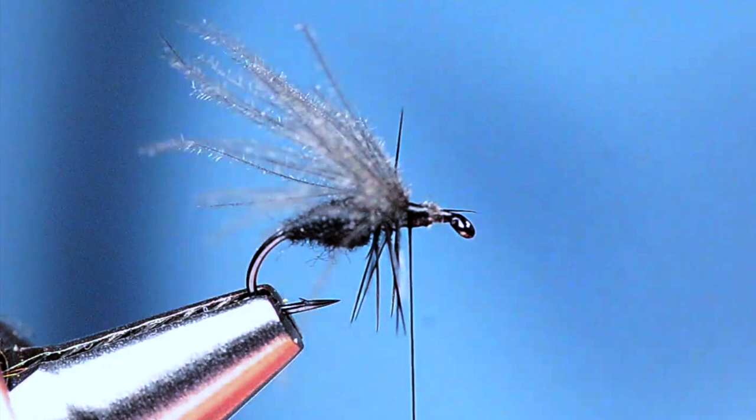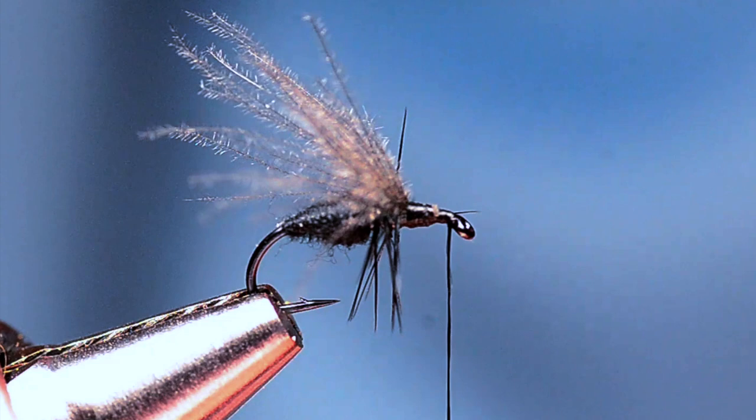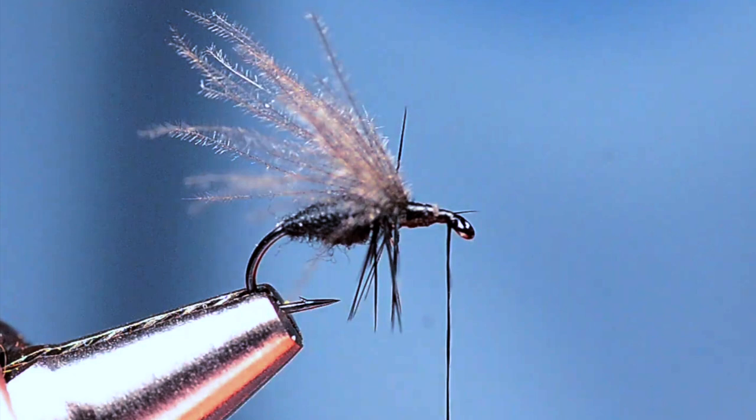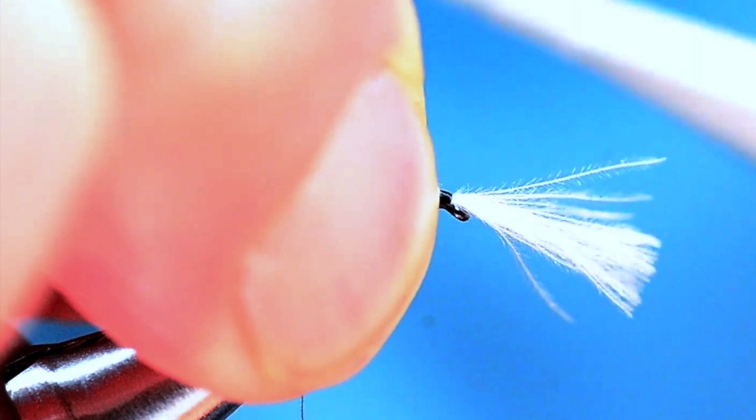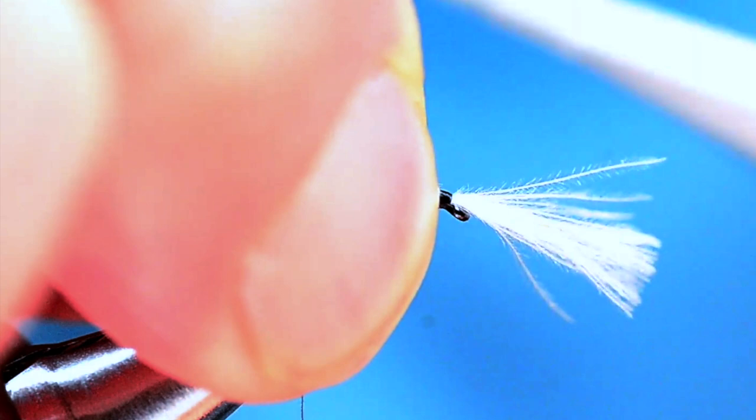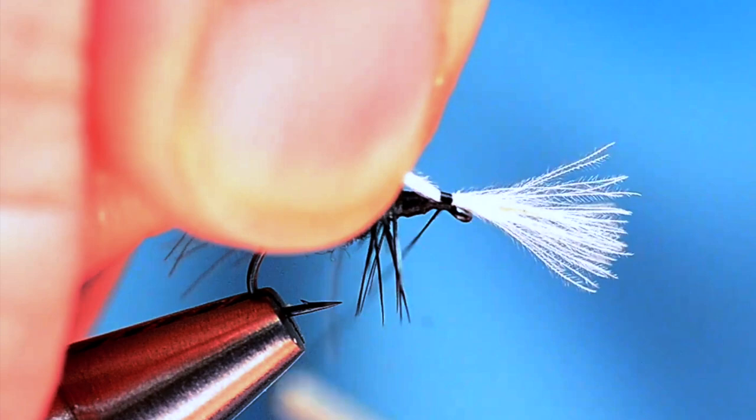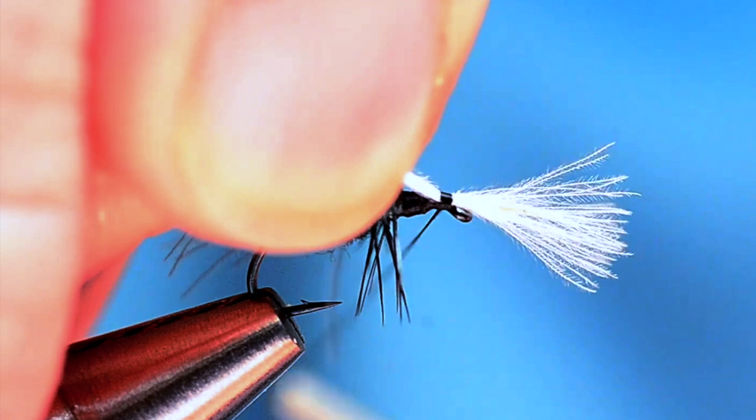Now I'm going to bump my thread right up to the hook eye. At this point, I'm going to take another white CDC feather and just take the tip of it. I'm going to tie this in up here behind the hook eye. Make a little band of thread there. I want this length to come up about halfway up the wing there. It might be a little long, so I can get in here and shorten this down a bit. Then I'll come in and trim that butt end out.